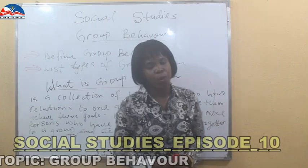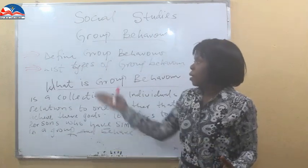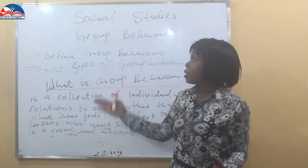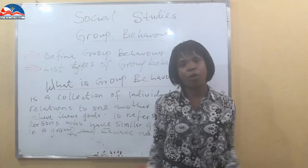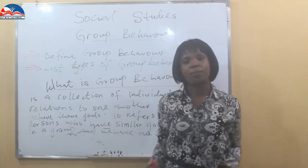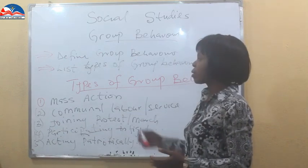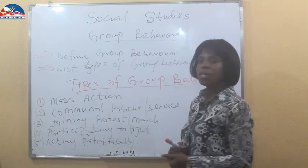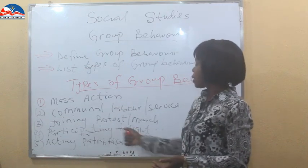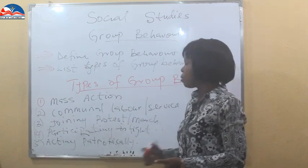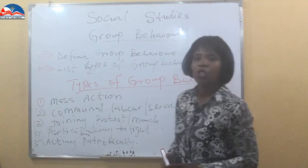Now we have seen what group behavior is. The next point is to see the types of group behavior that we have. What are the types of group behavior? We have: mass action, community level service, joining protest march, participating in fights, and acting patriotically.